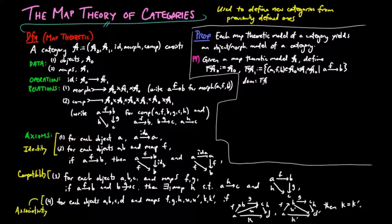We define domain to take a morphism F from A to B to object A, codomain to take a morphism F from A to B to object B, and identity to take an object A to the morphism identity A from A to A.